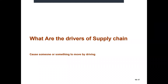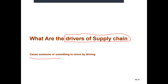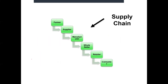Another important question related to the supply chain is the drivers of supply chain. A driver is something that causes someone or something to move. Before we go to the factors or the drivers, we need to understand the supply chain. Supply chain can be bigger or smaller, but usually it starts from a farmer, then to a supplier, then to a manufacturer, then to a wholesaler, retailer, and eventually a consumer.